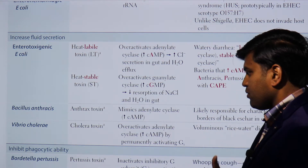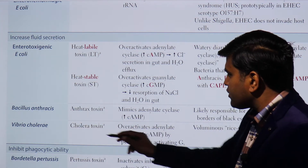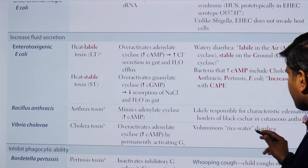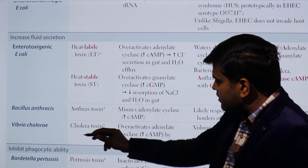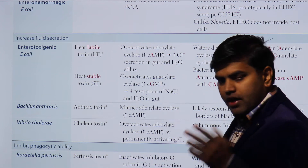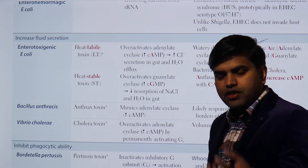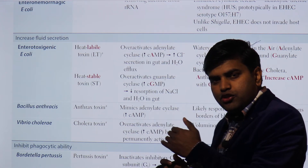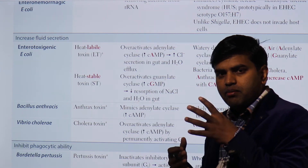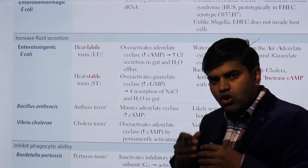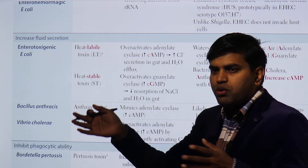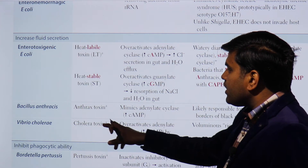Cholera toxin activates adenylyl cyclase by permanently activating the Gs protein, increasing cyclic AMP and causing voluminous rice-watery diarrhea. The cholera toxin has two subunits, A and B: B is for binding to the receptor, and A enters the cell and executes the action. Once inside, it activates adenylyl cyclase, increasing cyclic AMP, which opens sodium, potassium, and water channels on the intestinal brush border, flooding electrolytes and fluid into the lumen.